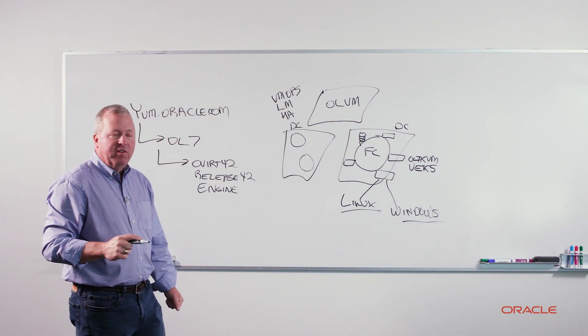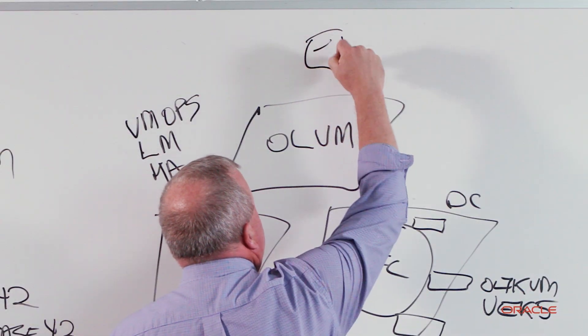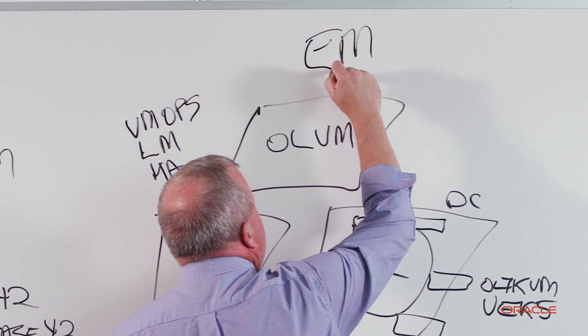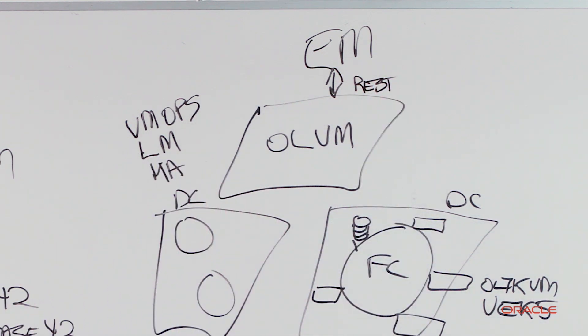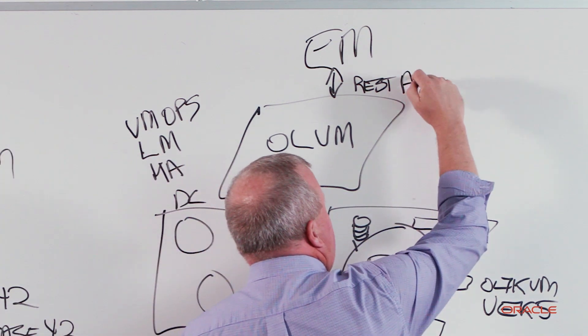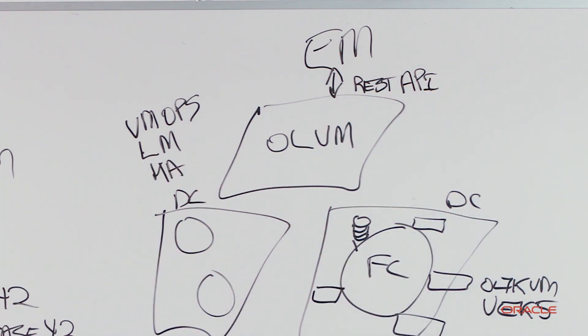On top of this, Oracle offers additional value. Enterprise Manager. EM is your single pane of glass that you can use to manage everything from your hardware through your applications, including your virtualization domain. It accesses the manager through our REST API. This REST API can be used also to automate many other tasks within your environment to ease your operations.